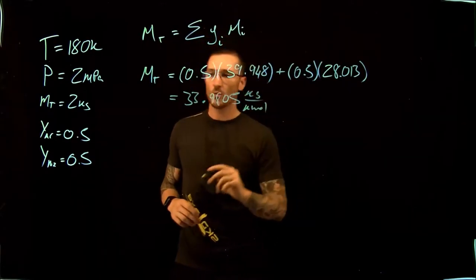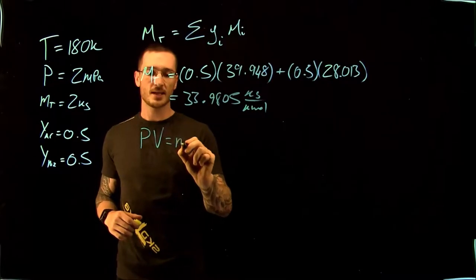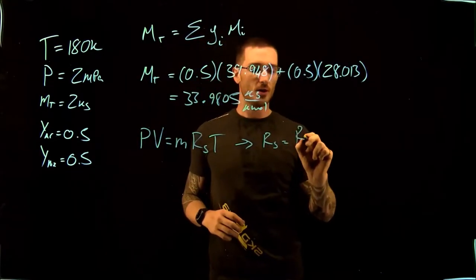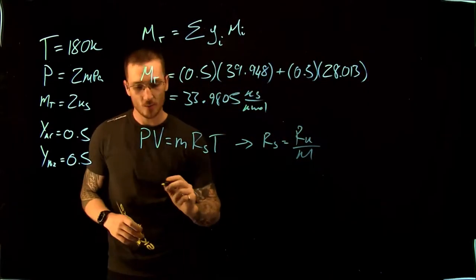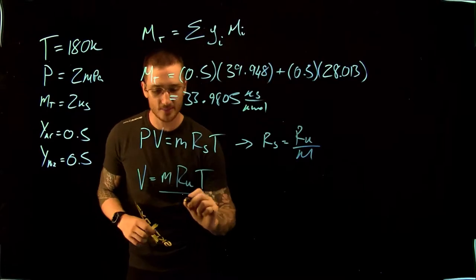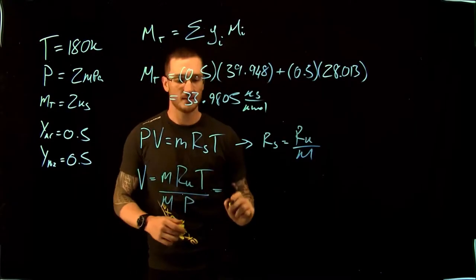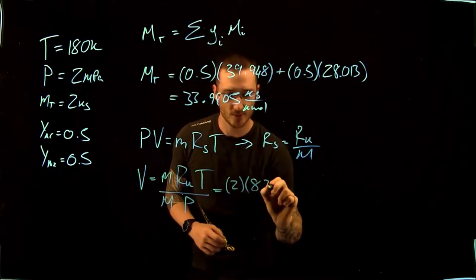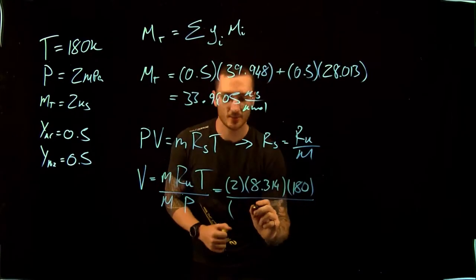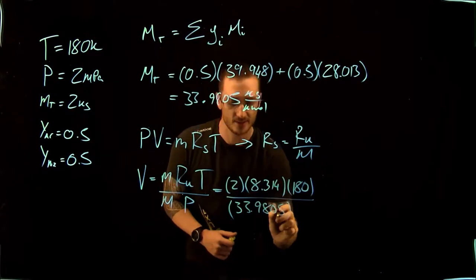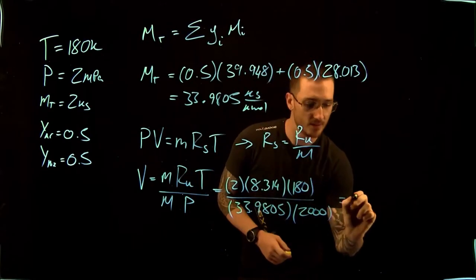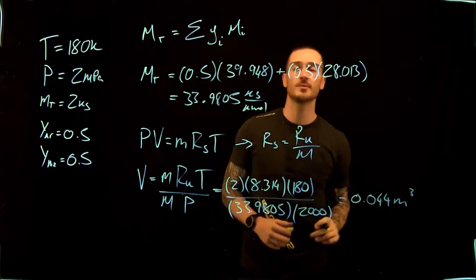We use the ideal gas law PV = mR_specific·T, where R_specific equals R_universal divided by the molar mass. So volume equals mass times R_universal times temperature divided by the molar mass of the mixture times the pressure. This gives us 2 × 8.314 × 180 divided by 33.9805 × 2000, which gives us a volume of 0.044 m³ using the ideal gas method.